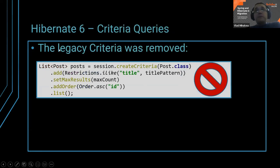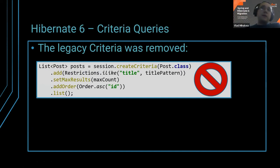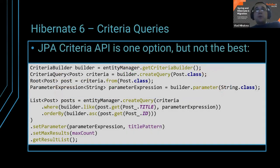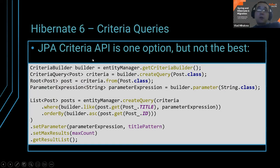One thing that might bother you: the legacy Criteria API — popular in Hibernate 3 — is now gone. It was deprecated since Hibernate 4 and has been removed in Hibernate 6. If you still use session.createCriteria() queries in your project, you'll have to migrate to Criteria API or something else. And Criteria API, I don't know who designed it, but it's extremely developer-unfriendly. It's one of those APIs where after 30 minutes of writing your query, you have no idea what you wrote. Coming back the next day, you still have no idea.